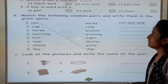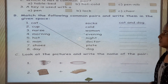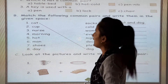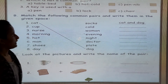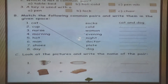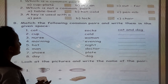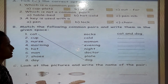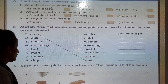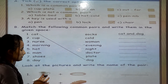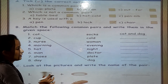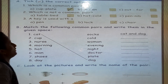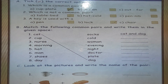Now, take the correct option. Which is a common pair? The options are: cup and plate, or in and out. Cup and plate is a common pair. When we are going to take tea, we need a plate also — not only a cup. So cup and plate is a common pair.